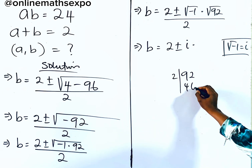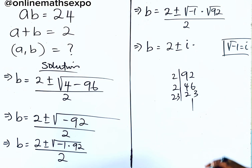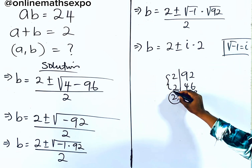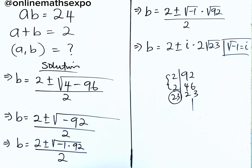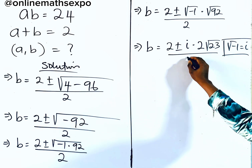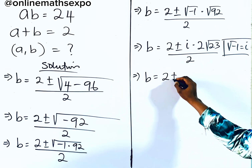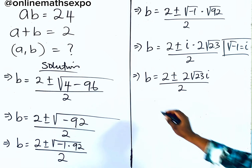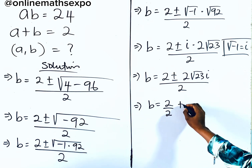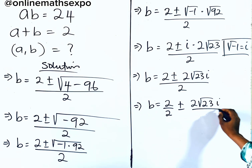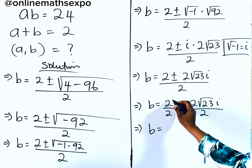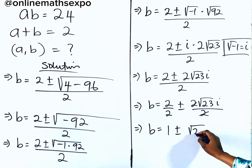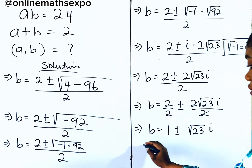Let's simplify √92. We have 92 = 4 × 23, so √92 = √4 × √23 = 2√23. Therefore b = (2 ± 2i√23) / 2. Dividing each term by 2: 2/2 = 1, and 2i√23 / 2 = i√23. So b = 1 ± i√23. These are the two values of b.